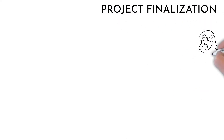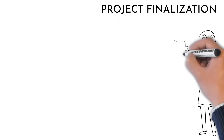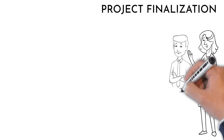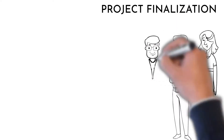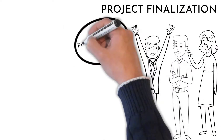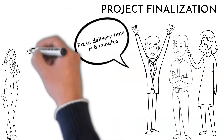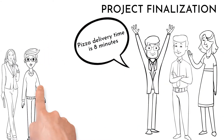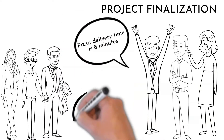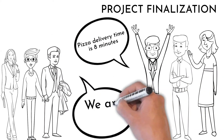The results are impressive: the current average cycle time is now 8 minutes, with variation between 7 and 10 minutes. The new improved process brings more satisfied customers to Pizza Family restaurant.